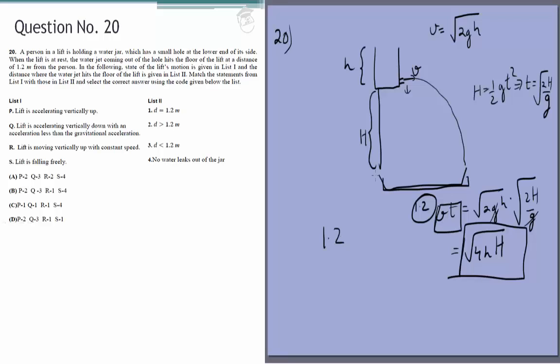When it is falling freely, this won't even come out because this speed will be 0. And you can't say that this is 0, so this whole term will cancel g because there just won't be any water coming out. So there won't be any d. So no water leaks out in case which is 4.